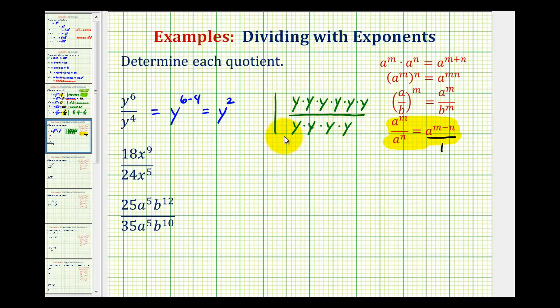Every time we have a y over a y, that simplifies to one. So this would be one, this would be one, this would be one, and this would be one. Notice how the result would be y squared over one, or just y squared.